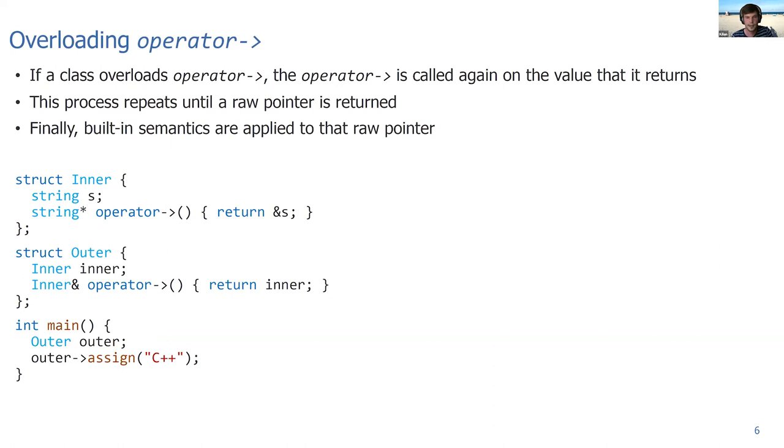The second language feature that we have to know about is operator overloading, especially overloading the operator arrow. You can overload certain operators as member functions and also as free functions. The operator arrow can only be overloaded as a member function. If you overload it, then the operator arrow will be called again on the value that it returns recursively till you return a raw pointer. When you return a raw pointer in the end, then the built-in semantics are applied to that raw pointer and dereference the pointer to give you the object that it points to.